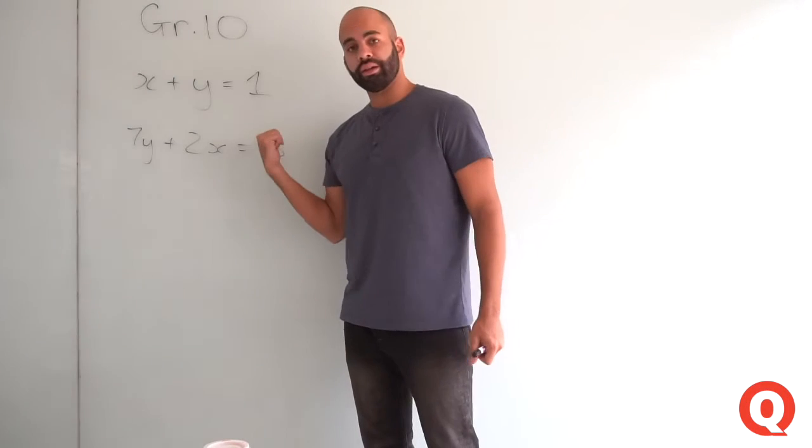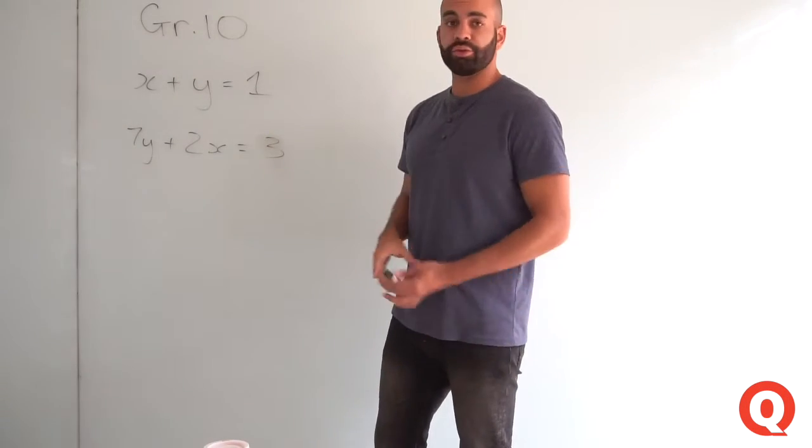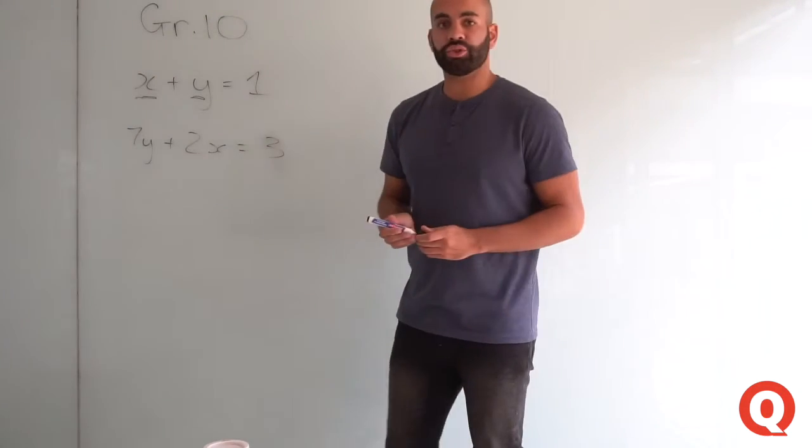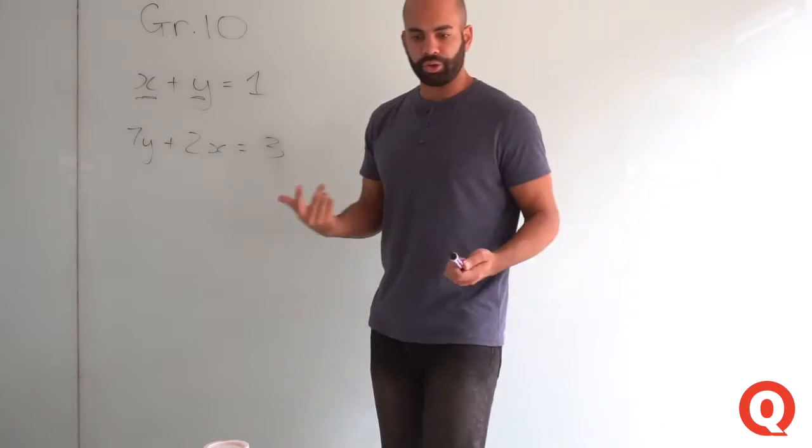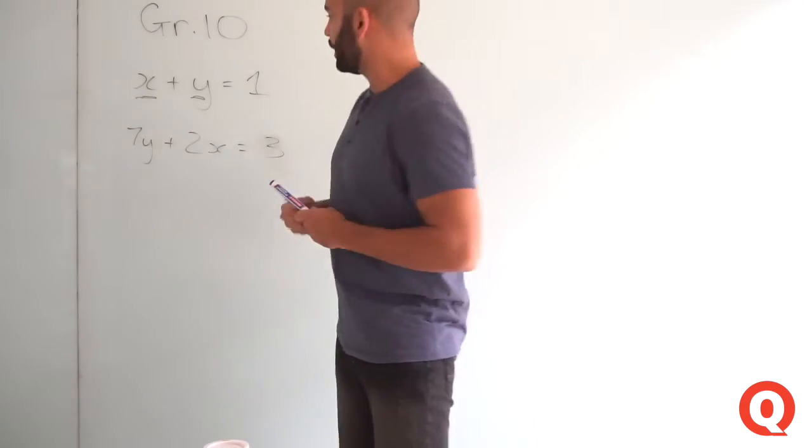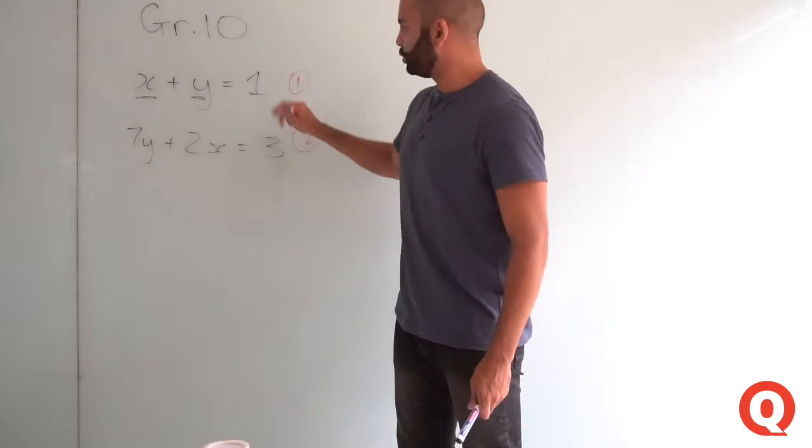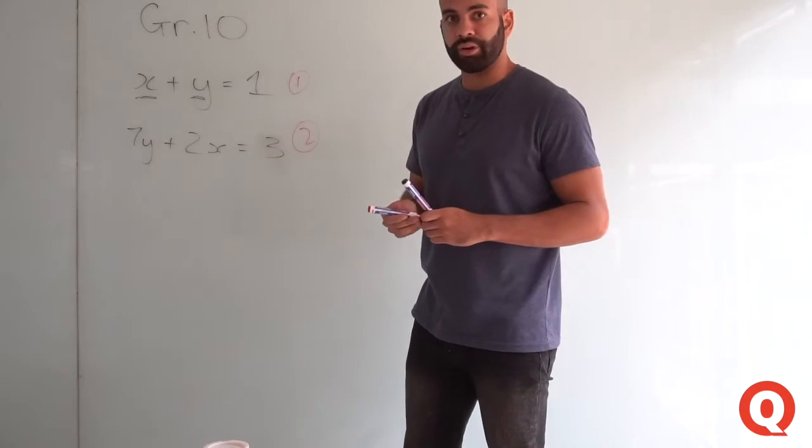In grade 10, you would have touched on simultaneous equations, solving a system of unknowns with linear equations. You would have had two linear equations and two unknowns, x and y. Because you have two equations and two unknowns, it's quite straightforward.